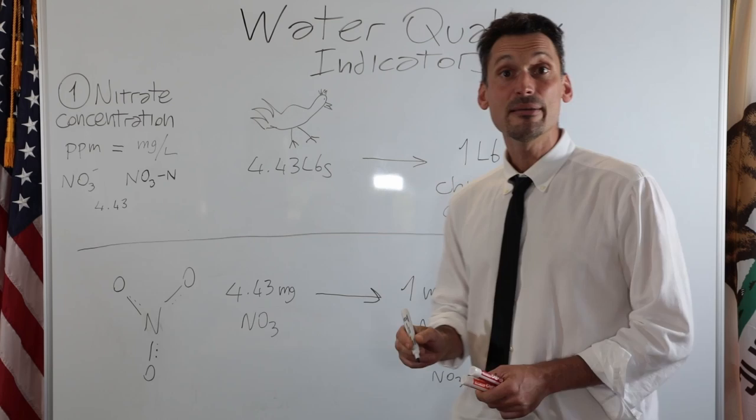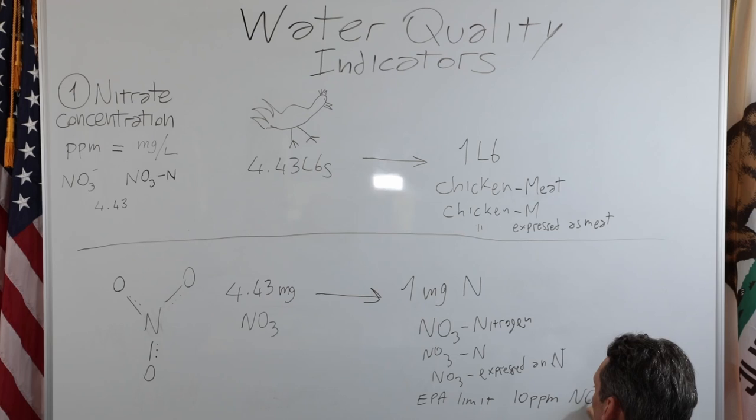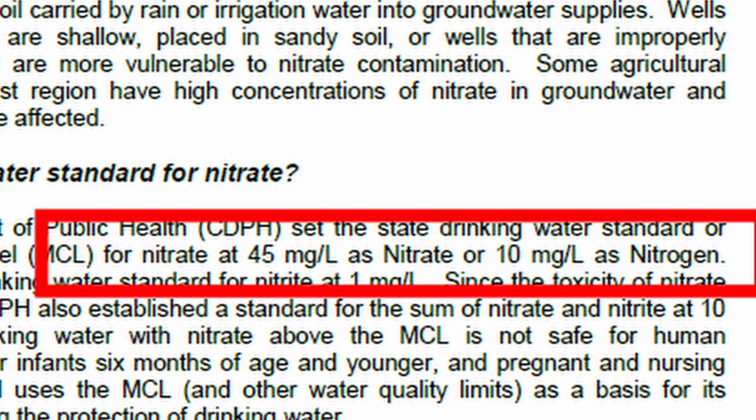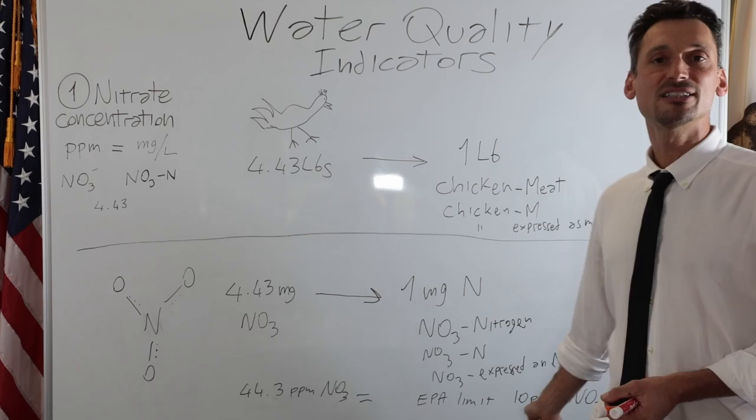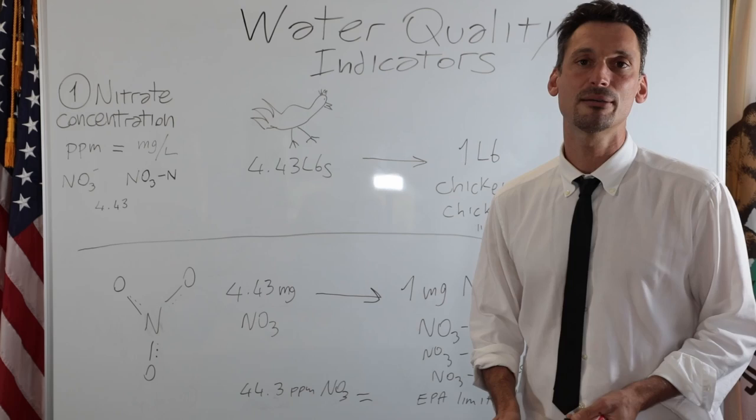So for example, the EPA limit for drinking water is 10 ppm. EPA limit is 10 ppm of nitrate nitrogen. So it corresponds to 44.3 ppm of NO3. And once I heard the conversation between two people that were fighting about this, and one of them said, no, the EPA limit is 10 ppm. And the other said, no, the EPA limit is 40 ppm. And they were fighting about that. And it turns out they were both right. They were just using different units.